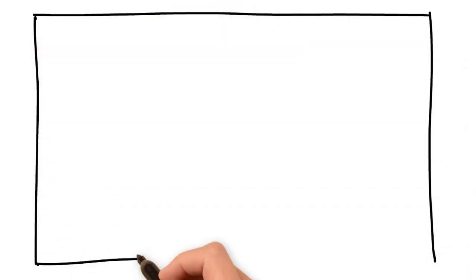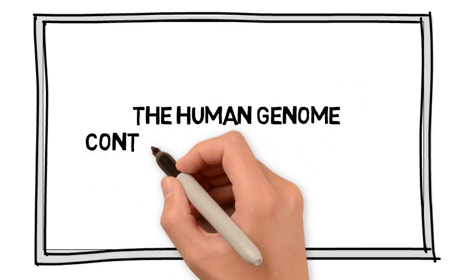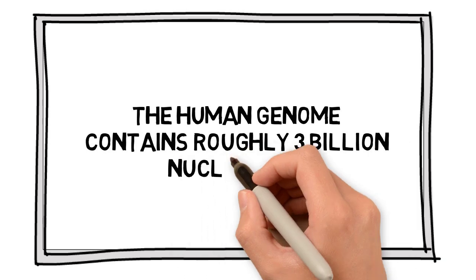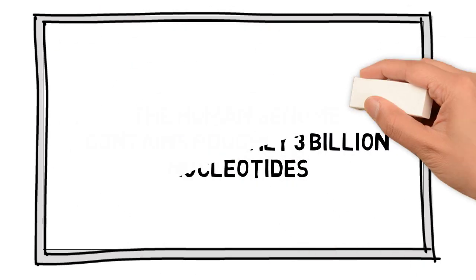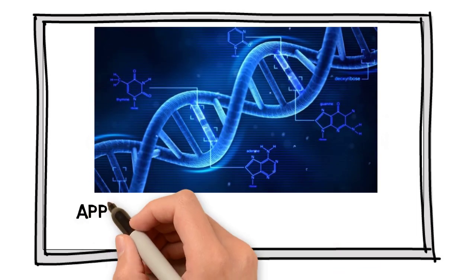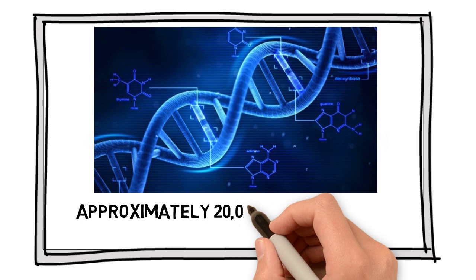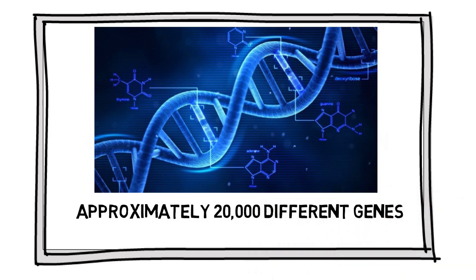Genome sizes vary among species. The human genome, for example, contains roughly 3 billion nucleotides. A sequence of nucleotides in a molecule of DNA that has an encoded function is called a gene. A gene works as a recipe to build proteins. There are approximately 20,000 different genes in the human genome.